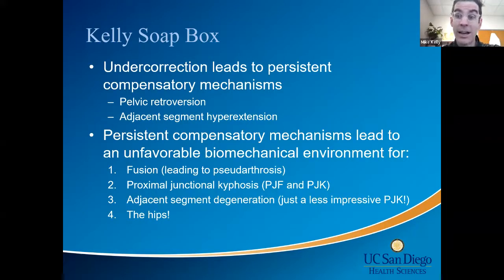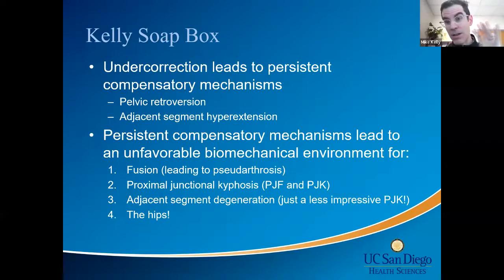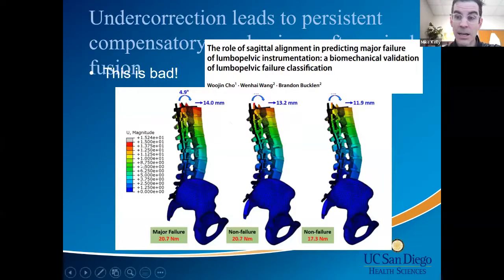Persistent compensatory mechanisms create an unfavorable biomechanical environment for fusion — the back is in tension as they're trying to flex. This leads to proximal junctional kyphosis at the adjacent segment and adjacent segment degeneration — essentially a less impressive PJK that just degenerates. The hips are also affected: fusing to the sacrum means the next joint is the hip. How many of those are pelvic retroversions where we've essentially created iatrogenic acetabular dysplasia?